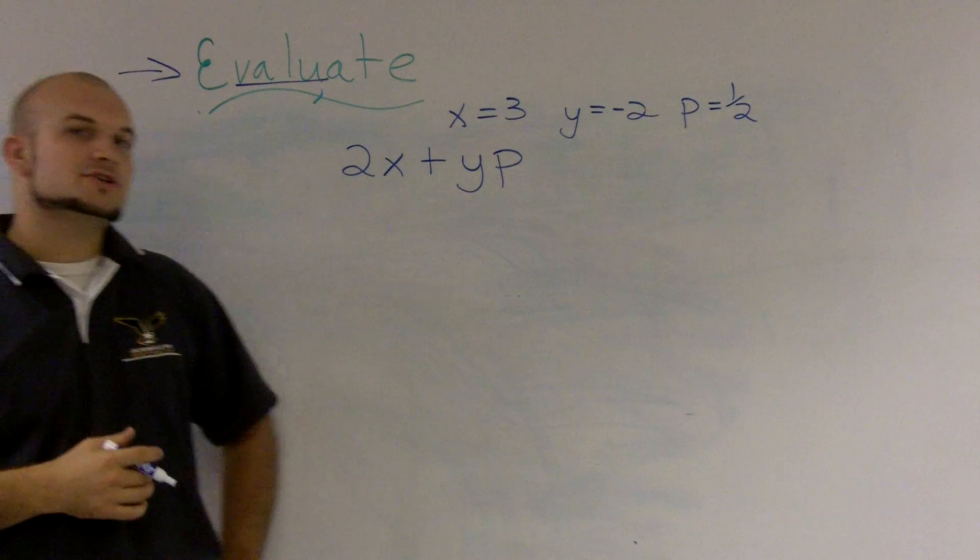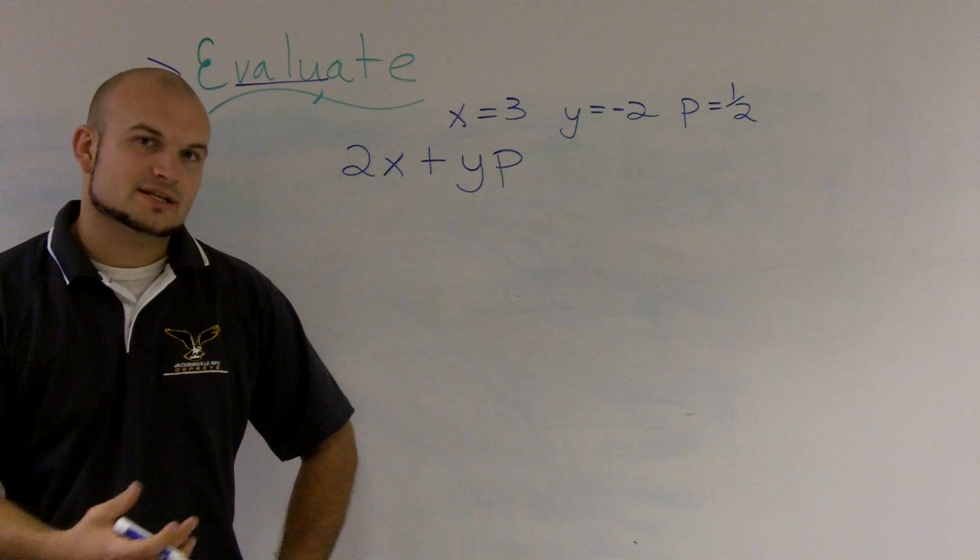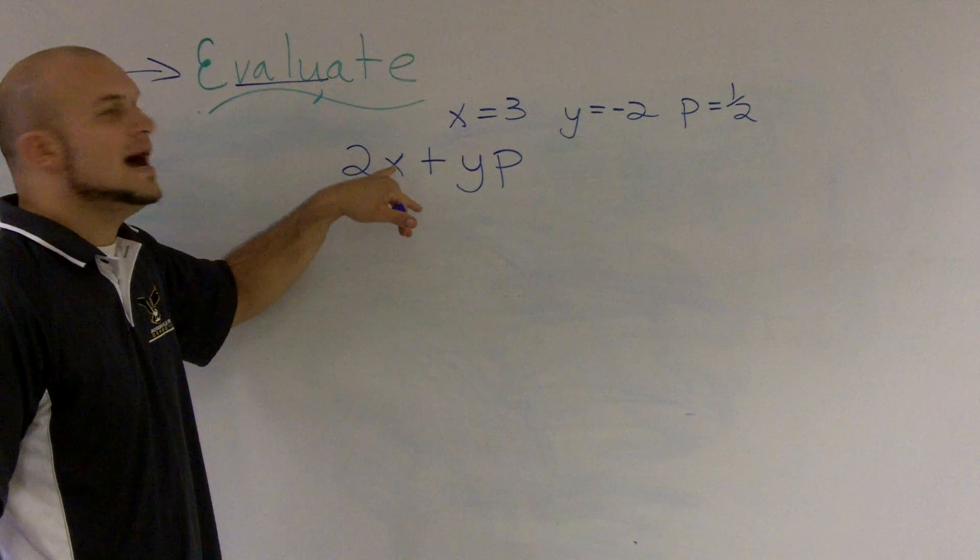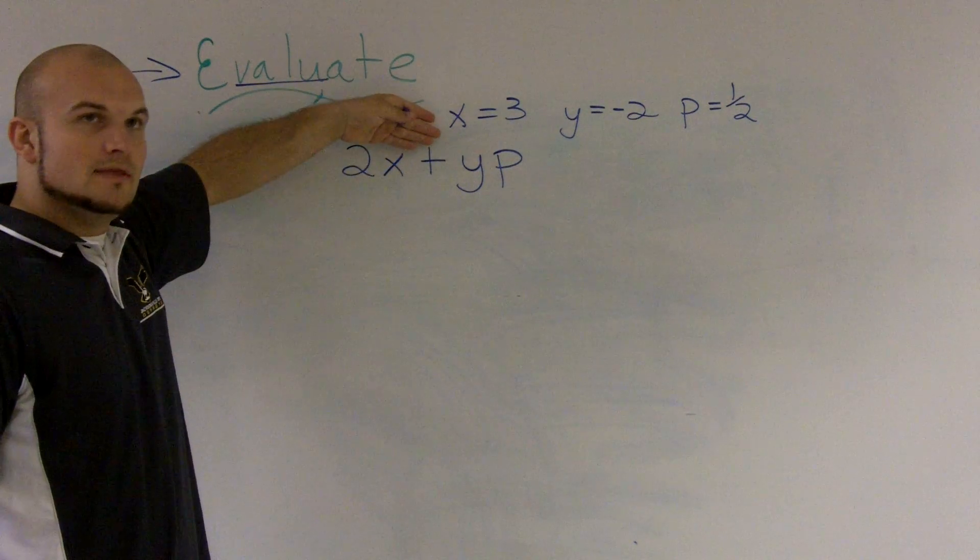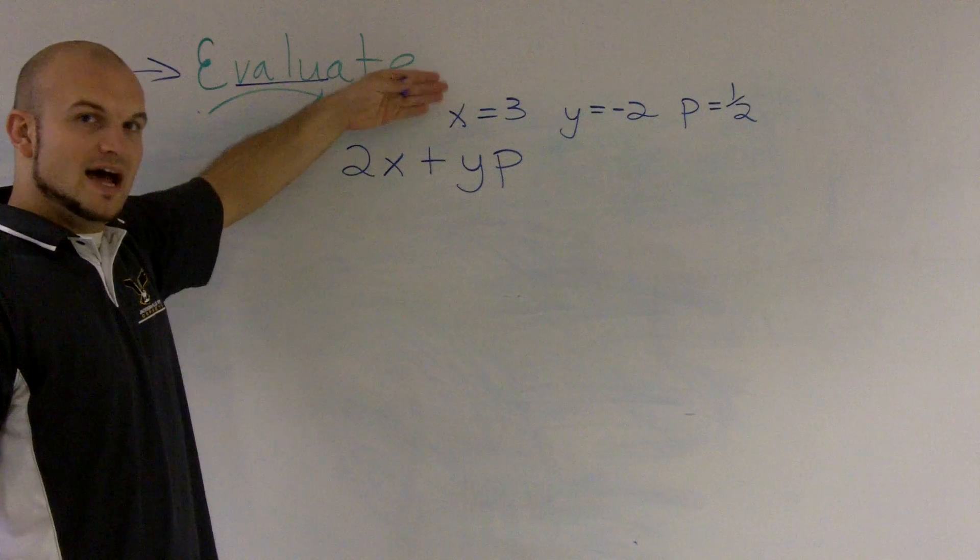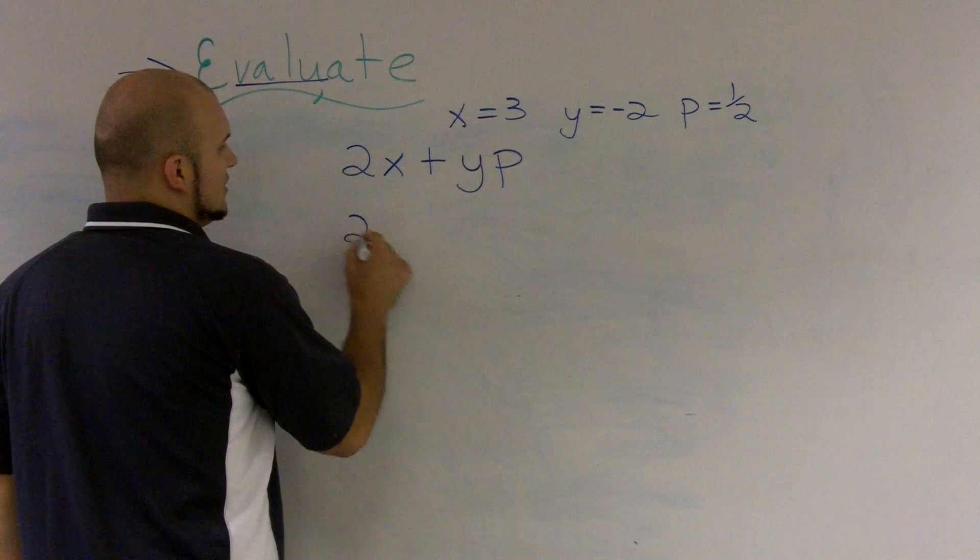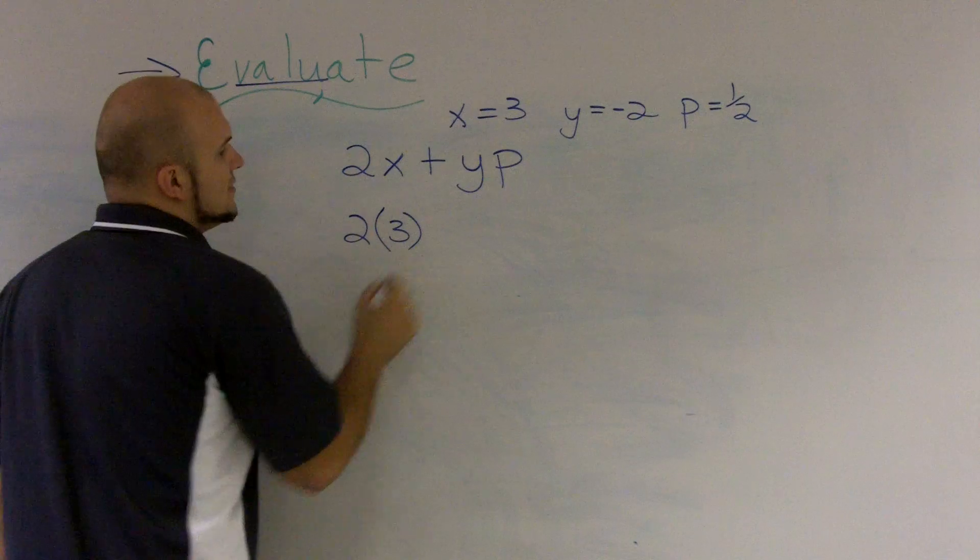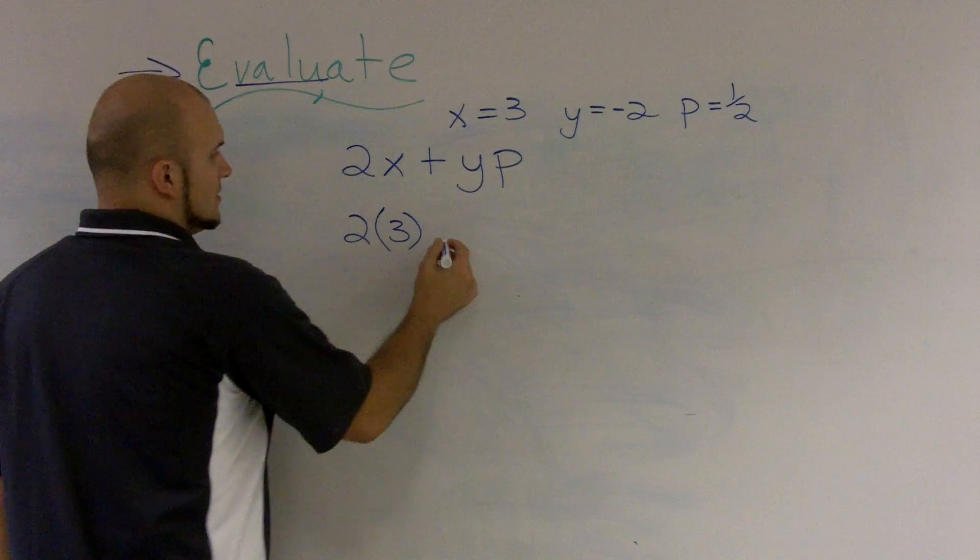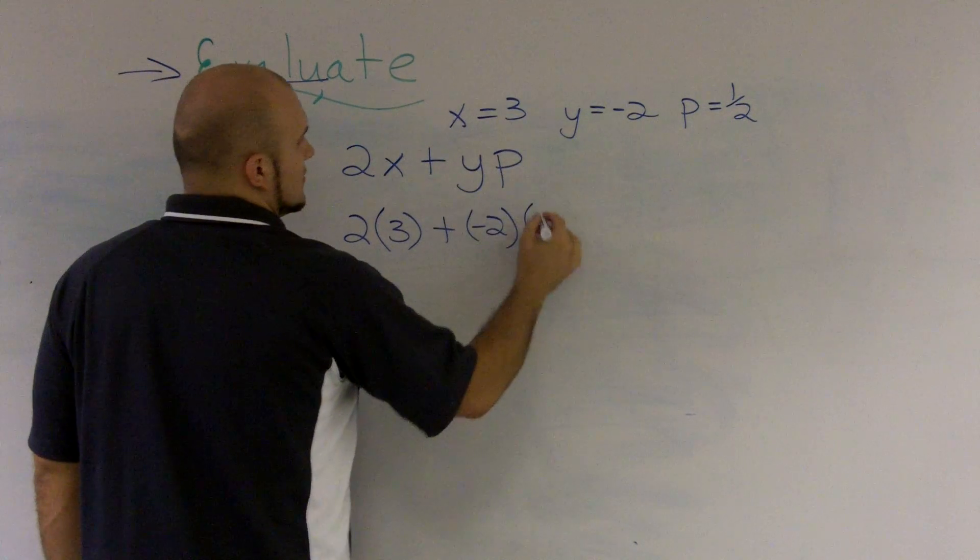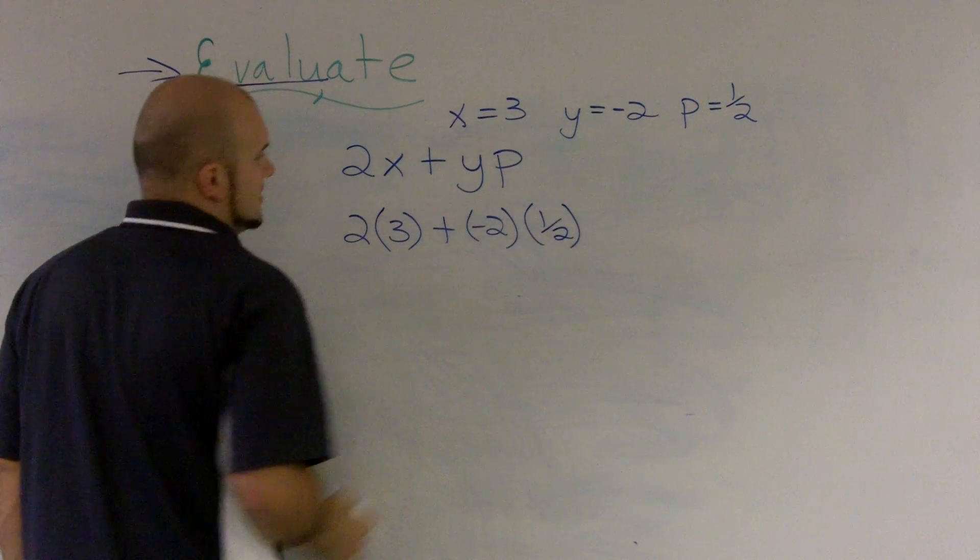So, what I'm going to do when I want to evaluate an expression, I'm going to say, all right, well, here's my expression. I know now, since I put in these definitions for what the value should be, I know that x now equals 3, so I'm going to plug in a 3 for the x. I plug in a negative 2 for the y and a 1 half for the p.